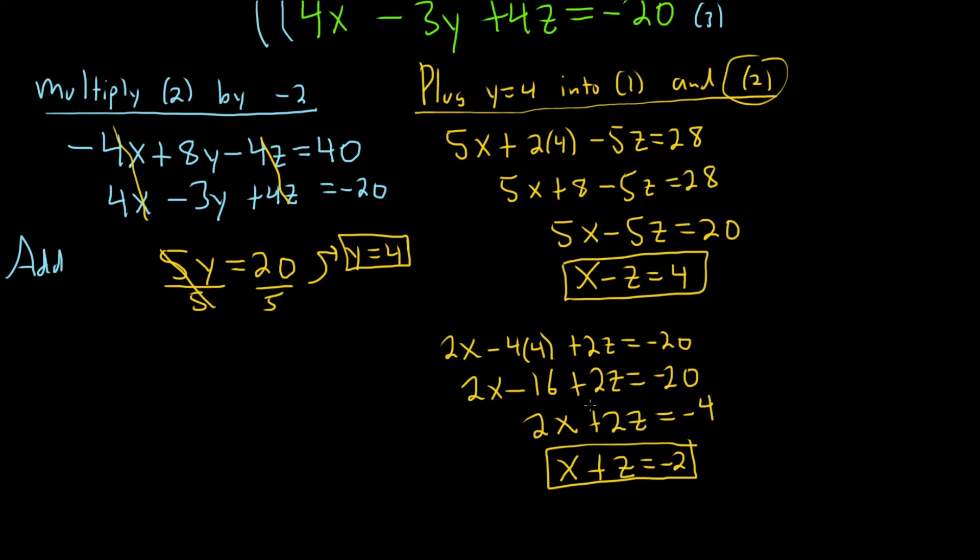Now what we do is we can solve these two equations. Look at that, that's really nice. This worked out nice. It started off as a really ugly problem possibly, but it became nice. Now we're going to write them on top of each other. So x plus z equals negative 2. We can just add them and cancel the z's. Let's add.